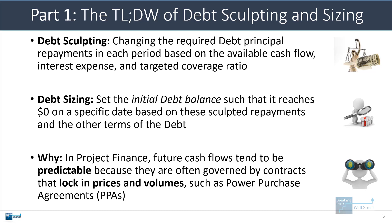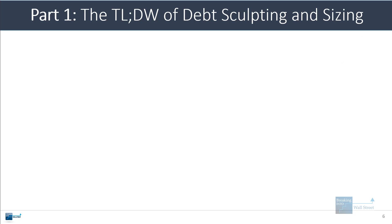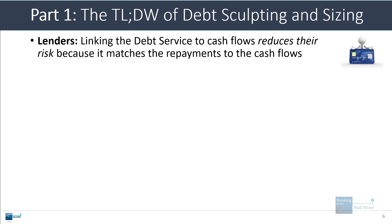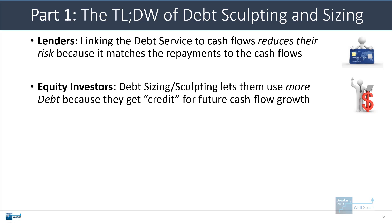The reason you do this is because in project finance, future cash flows tend to be quite predictable since they're often governed by contracts that lock in prices, volumes, and price escalations over time — such as power purchase agreements or PPAs in the power and utility sector. Lenders like this concept of linking the debt service — interest expense plus principal repayments — to cash flows, as it reduces their risk by better matching repayments to actual cash flows. Meanwhile, equity investors like debt sizing and sculpting because it lets them use more debt, since they get credit for future cash flow growth that is already locked in or very predictable, such as for a transportation asset or a water utility.